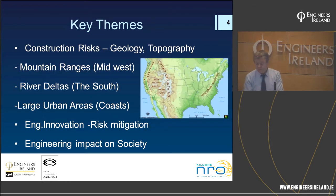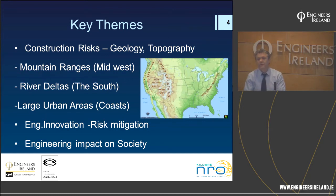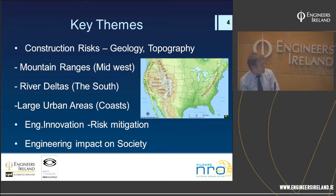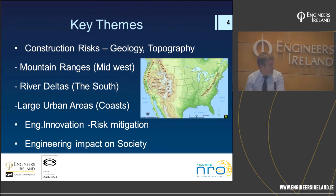The key themes linking all the interstate projects are: construction risks associated with the geography of the United States — the Rocky Mountains, Sierra Nevada, Appalachian Mountains, and the Colorado Plateau canyons — plus the soft river delta areas of the Mississippi River in the south, and the large urban areas on the east and west coasts. The second theme is engineering innovation — the innovative design and construction standards used to address these risks. The third theme is the relationship between engineering and society, and how one influenced the other.